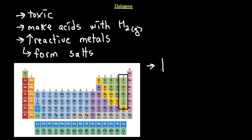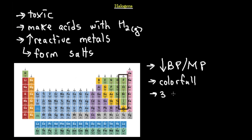Halogens have low boiling points and melting points relative to the metals we've discussed. These elements are colorful and exhibit all three states of matter — solid, liquid, and gas. Fluorine and chlorine are typically gases at STP, bromine is a liquid, and iodine is a solid at STP.